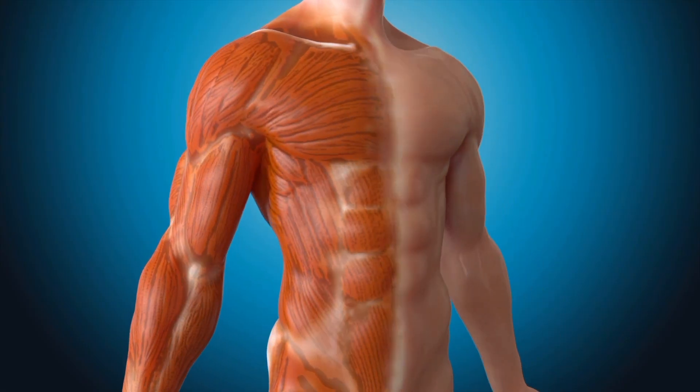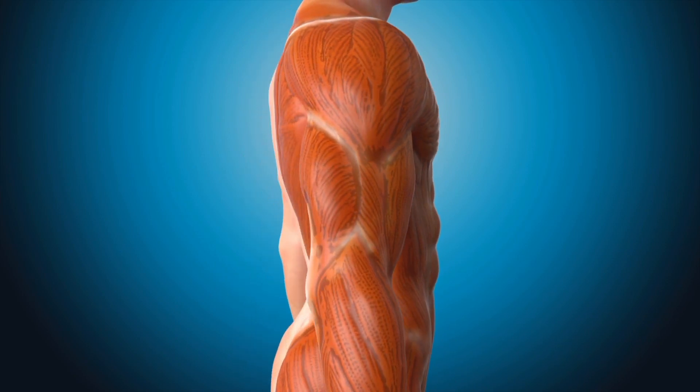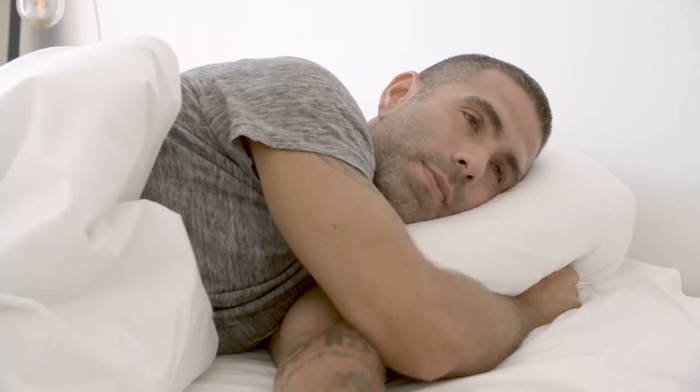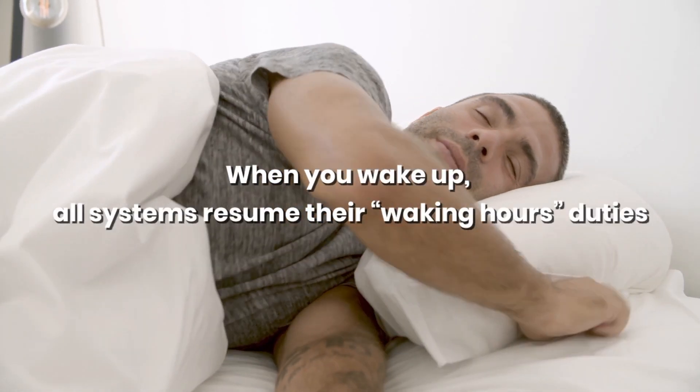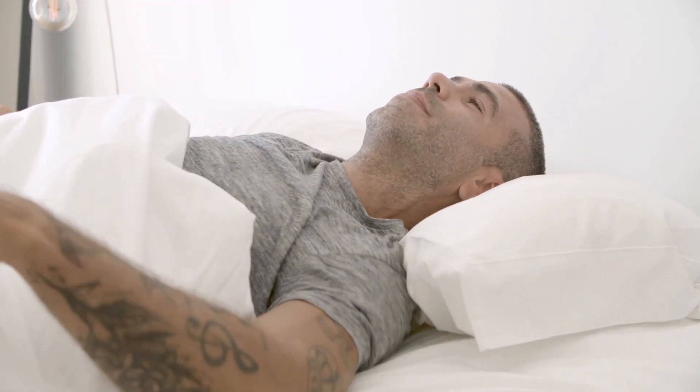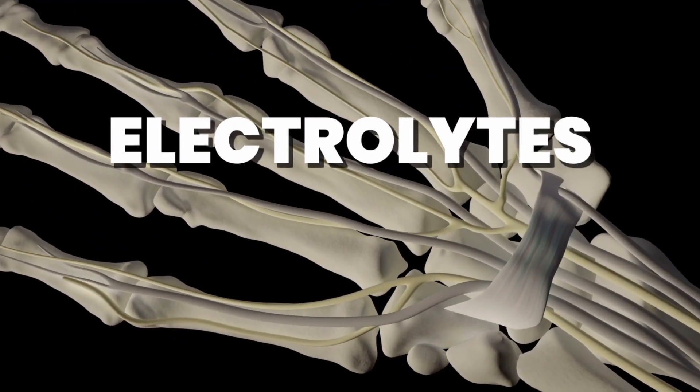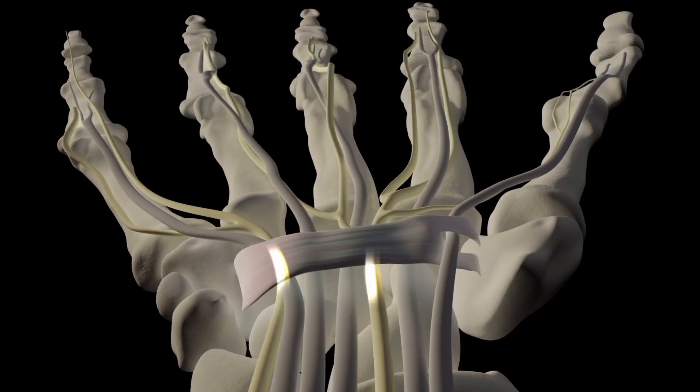Thus, the body decides which parts need the most oxygen and electrolytes, and reduces blood flow to the muscles in the limbs. The moment you wake up, all systems resume their waking hours duties, but this doesn't happen instantaneously. It takes some time to get the electrolytes flowing through the muscles in your hands again. That's why you may not be able to make a fist the moment you wake up.